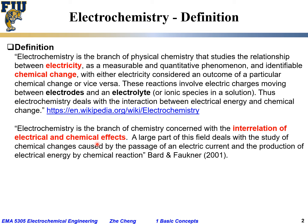A large part of the field deals with the study of chemical changes caused by the passage of an electrical current — that is, you pass electrical current through a system and there will be some chemical change or chemical reactions. On the other hand, there is the production of electrical energy by chemical reaction, where the cause is the chemical reaction and the end result would be generation of electrical power, which is sometimes harvested and sometimes not.